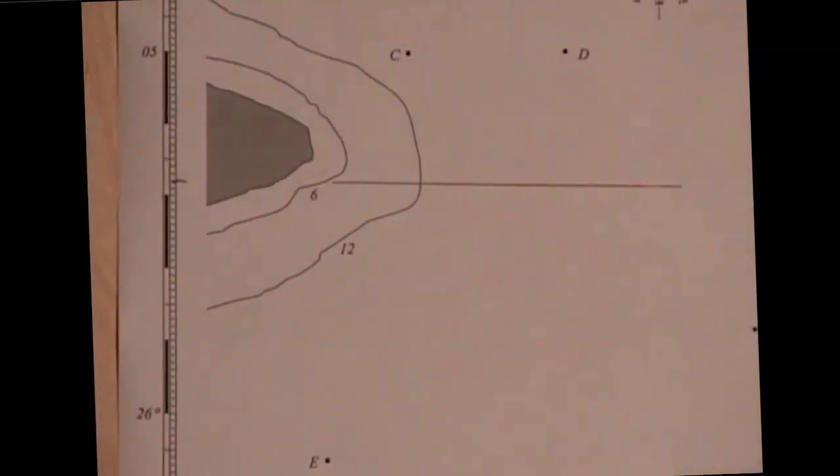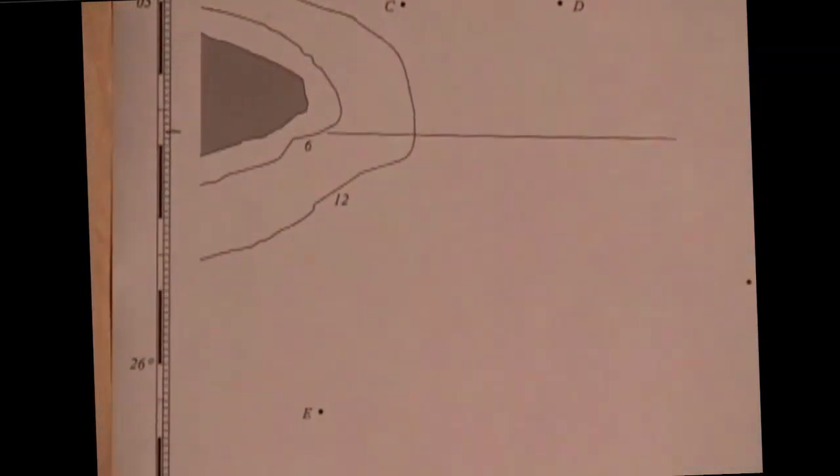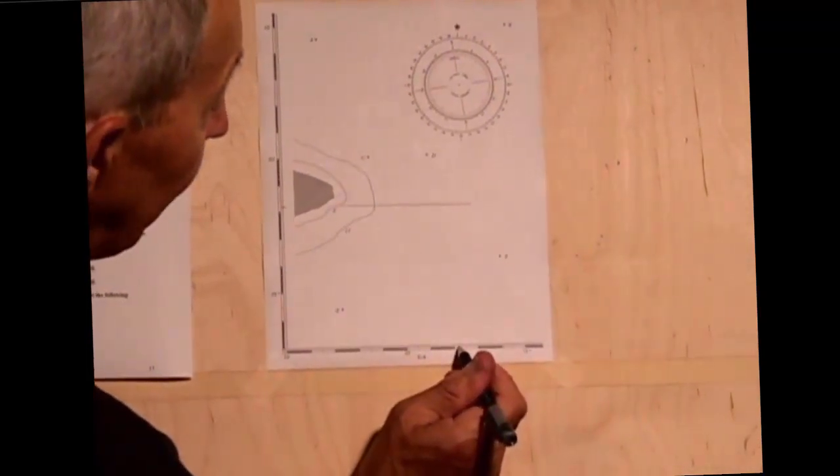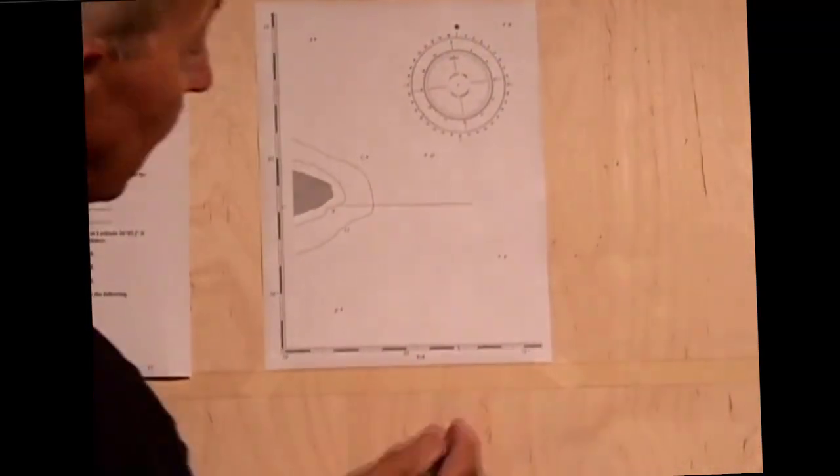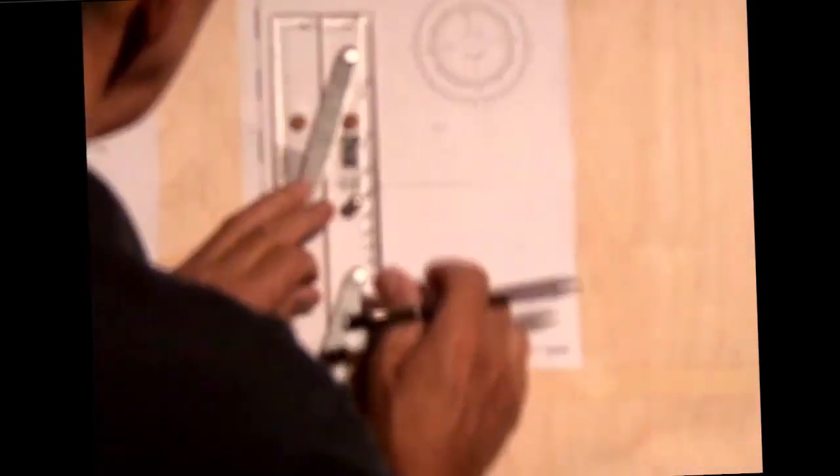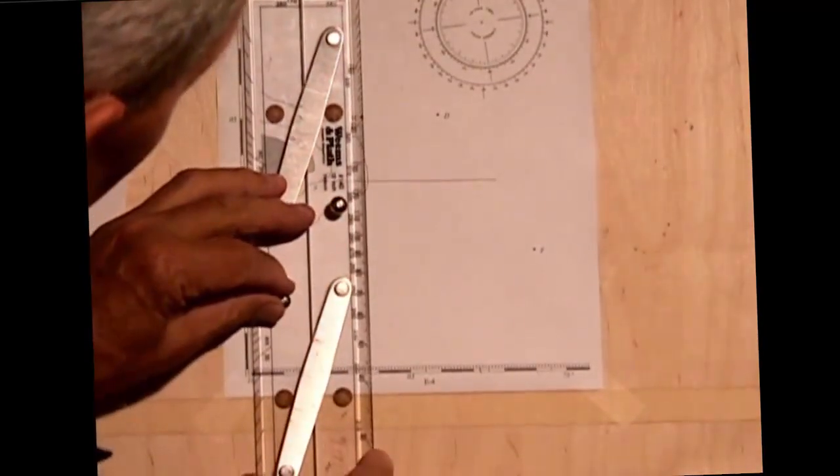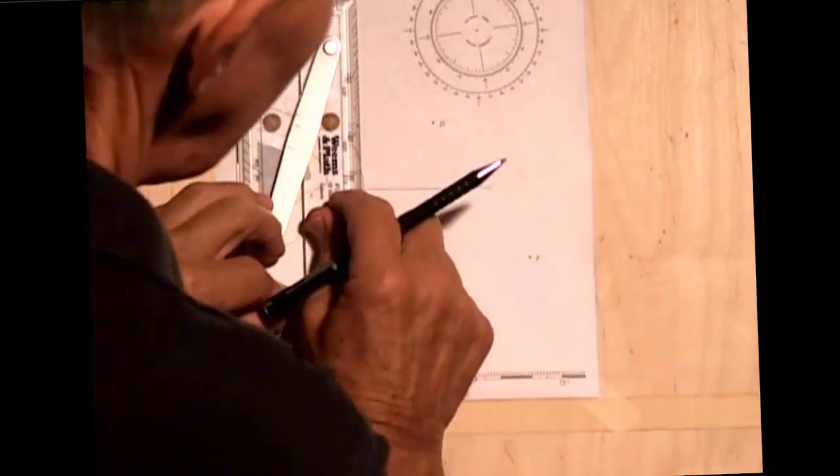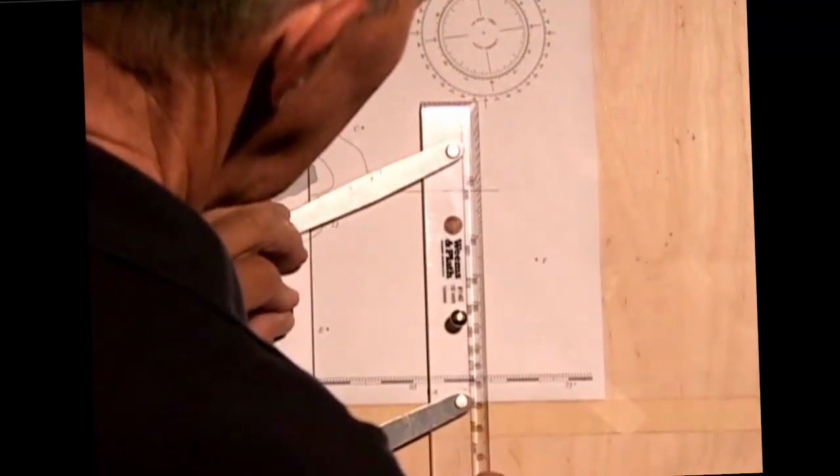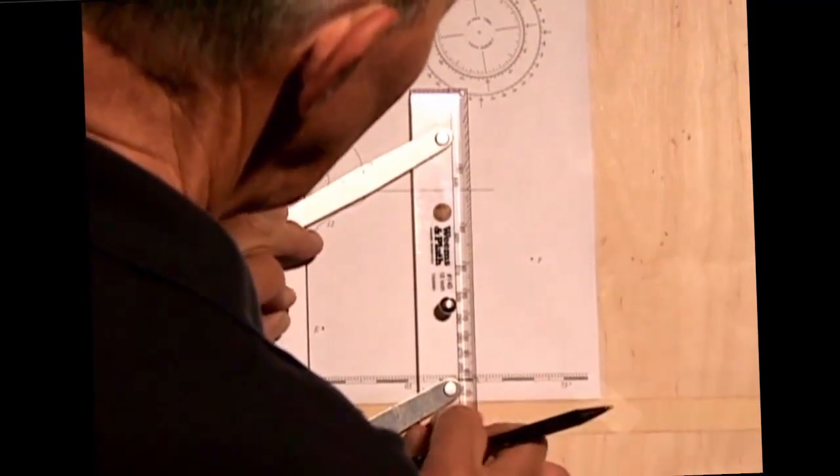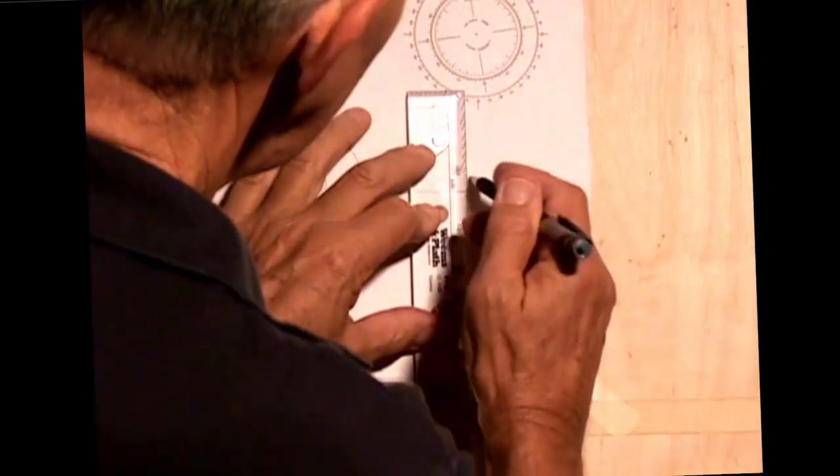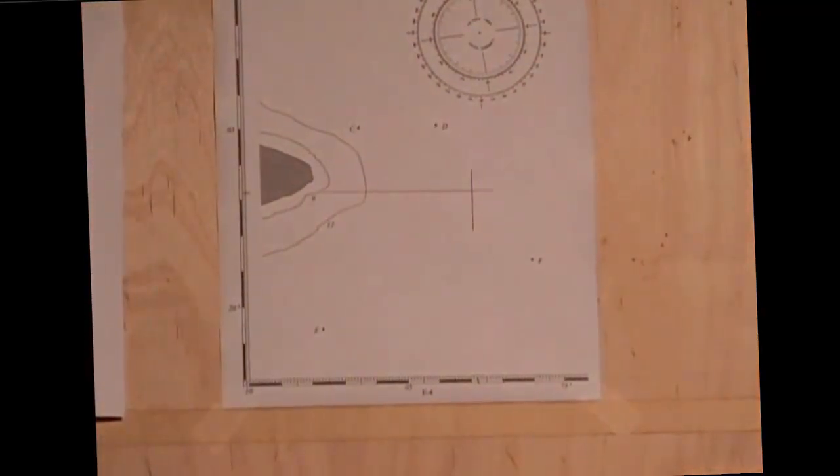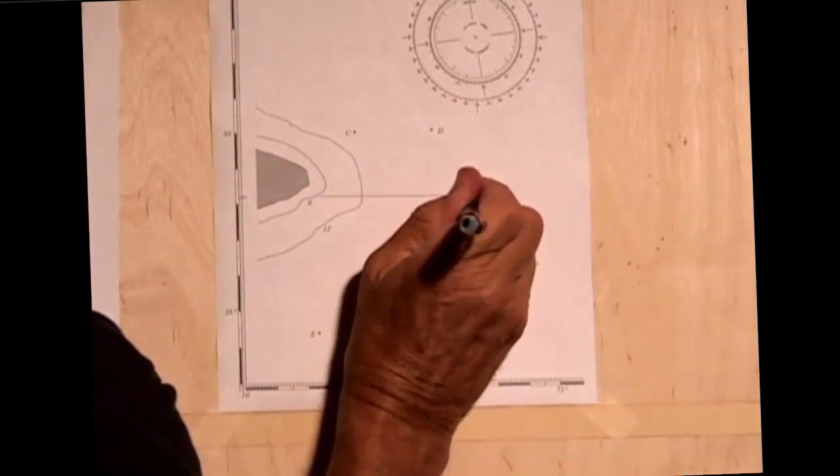And we want to take the longitude 75°02.8', 75°01', 02', 02.8'. Here's the 0.8. And I have to take, again, my parallel rules, parallel to this left scale. Where those two lines intersect is my point G.